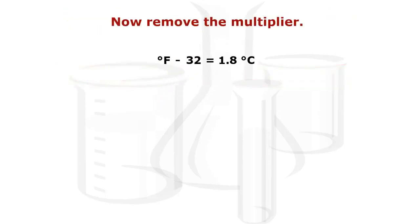Now remove the multiplier. Degrees Celsius equals degrees Fahrenheit minus 32 divided by 1.8.